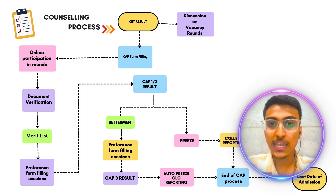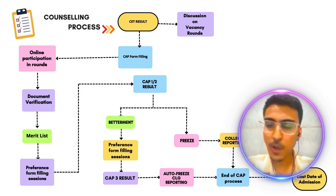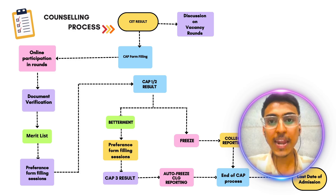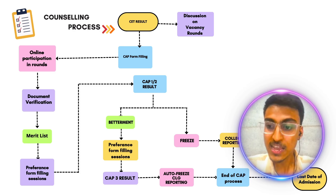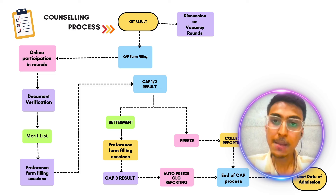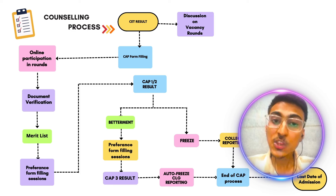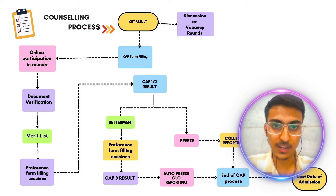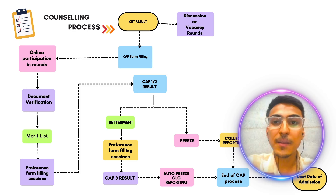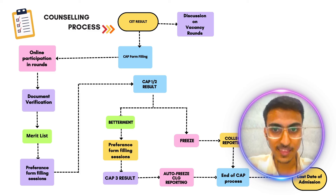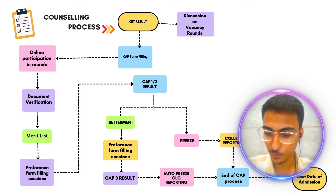कई सारे बच्चे होते हैं जो यहाँ पे जाके admission confirm नहीं करते — उनको already JEE के through NITs, IITs मिले होते हैं, तो वो लोग Maharashtra में admission नहीं लेते। Final admission के time college में documents submit करने नहीं जाते, fee payment नहीं करते — तो उनकी जो seats होती हैं, वो vacancy seats में convert हो जाती हैं — मतलब खाली seats बच जाती हैं। अब college के पास खाली seats हैं — उनको fill करना ही पड़ेगा। तो वो लोग अपने end से vacancy round conduct करते हैं। इस round में government का कोई role नहीं है — यह हर एक college पर depend करता है। यहाँ पे शुरू हो जाता है management round + institutional round + vacancy round।